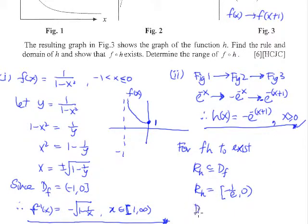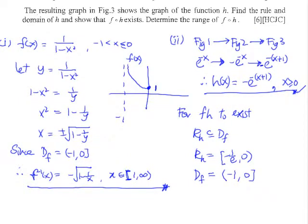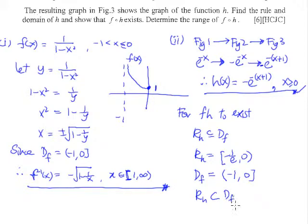The next thing is to find the domain of f, which is given to us as negative 1 to 0. Now, e is approximately 2.71, so 1 over e is about 0.5 — meaning negative 1 over e is about negative 0.5. So the range of h from negative 0.5 to 0 is definitely a subset of the domain of f from negative 1 to 0. Therefore our f of h will exist.